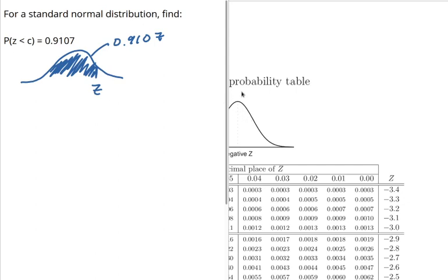Now to find the z-score that has that to the left, I need to look up 0.9107 in the table or I'll show you how to do it in a spreadsheet.